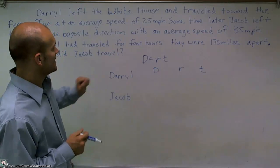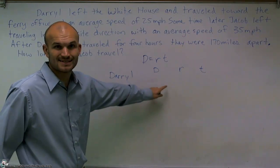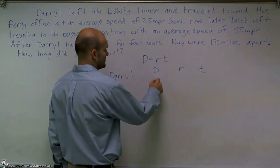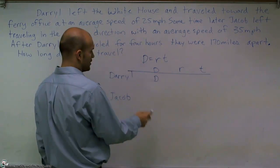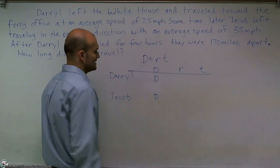So for Daryl, the distance, we don't know what his distance traveled. So I'm just going to write D. I don't know how far Daryl traveled, nor do I know how far Jacob traveled. So I'll put a D there as well.